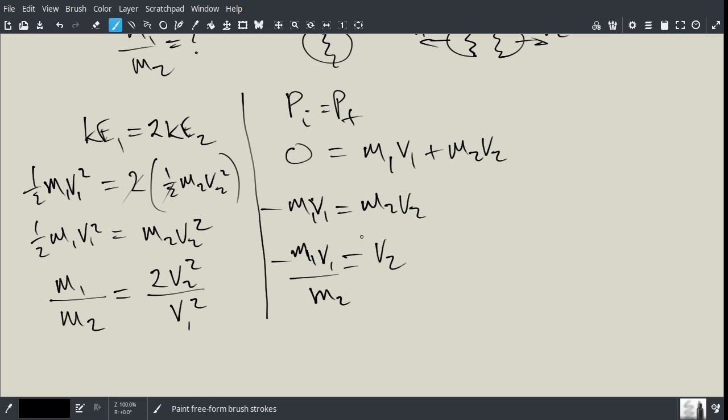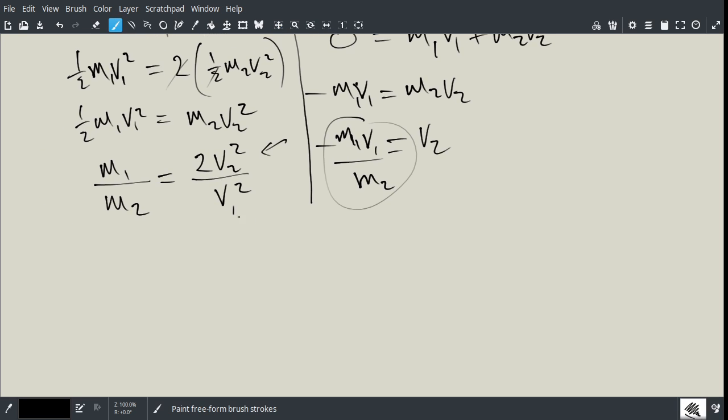Now what I'm going to do is I'm going to take this and substitute this in for V2 on that side. So, I'm going to write this equation out again. M1 all over M2 is equal to two times. Now I'm going to substitute for V2, and I'll say negative M1 V1 all over M2 squared divided by V1 squared.